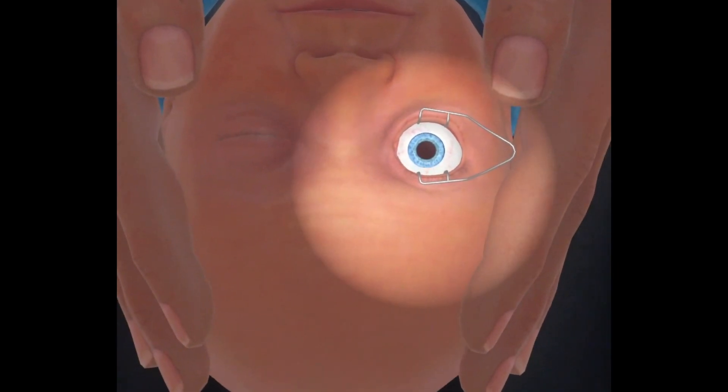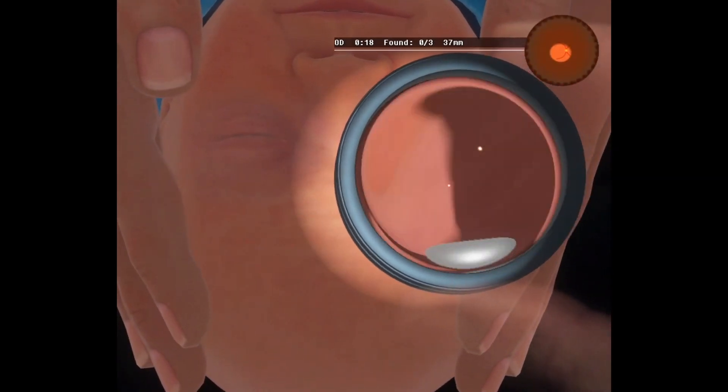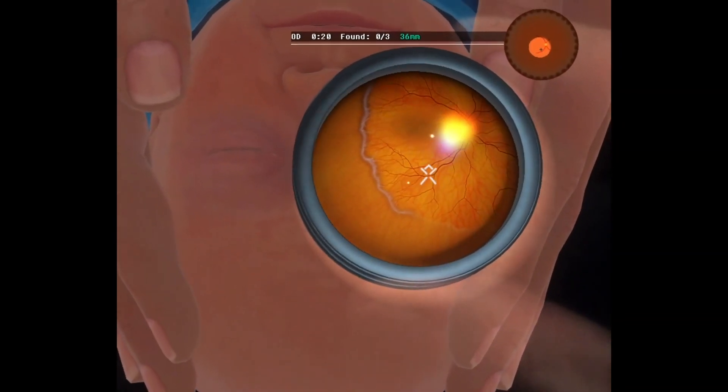The indirect ophthalmoscope mimic and the handheld lens must be aligned precisely with the patient's eye to visualize the retina.